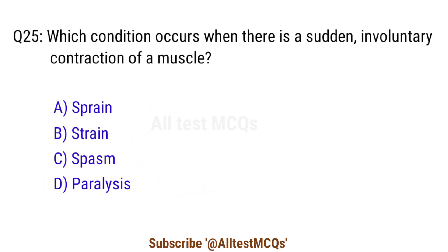Question 25. Which condition occurs when there is a sudden involuntary contraction of a muscle? The right answer is option C. Spasm.